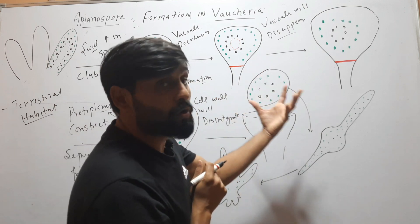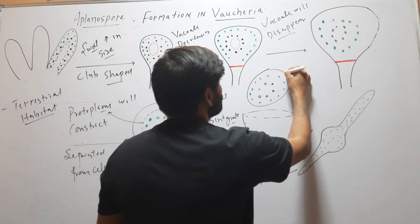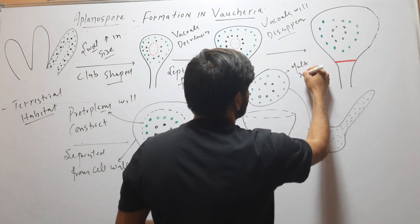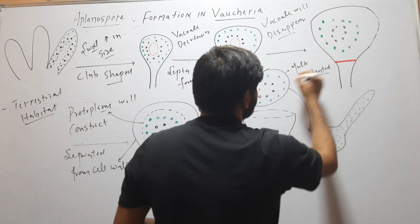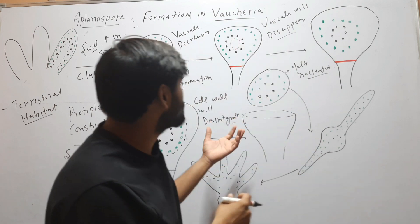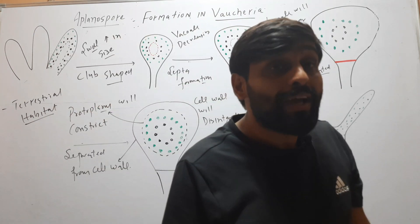And this spore, the aplanospore, will come out. Here you can see that this aplanospore is multi-nucleated, but here flagella is absent.